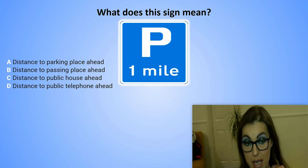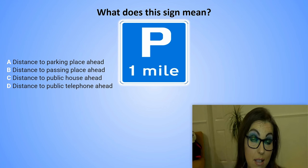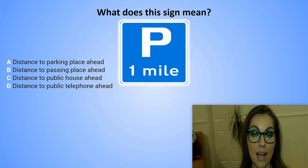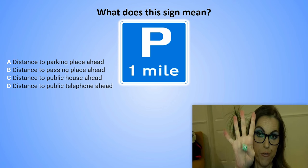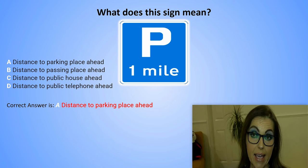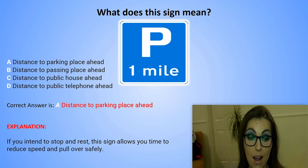What does this sign mean? A. Distance to parking place ahead. B. Distance to passing place ahead. C. Distance to public house ahead. Or D. Distance to public telephone ahead. The correct answer is A. Distance to parking place ahead. Explanation: If you intend to stop and rest, this sign allows you time to reduce speed and pull over safely.